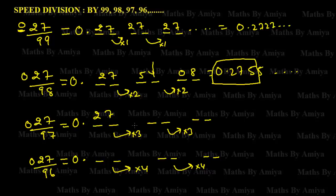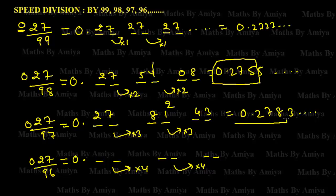For 27 divided by 97: the gap is 3, so 27 × 3 = 81, then 81 × 3 = 243, giving 43 with carry 2. That becomes 278, and so on. Working on the first three or four digits, 27 divided by 97 is approximately 0.2783.